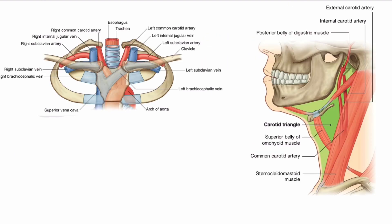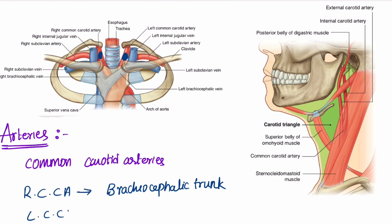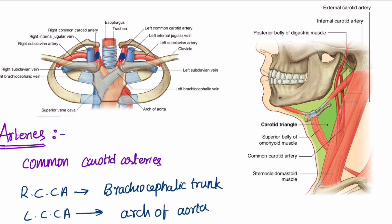Now let us see the arteries in the anterior triangle. The major arteries are the common carotid arteries. The right common carotid artery arises from the brachiocephalic trunk, and the left common carotid artery arises from the arch of the aorta. The right common carotid artery enters the neck near the right sternoclavicular joint, and the left common carotid artery enters behind the left sternoclavicular joint.